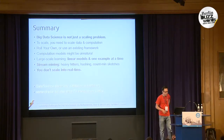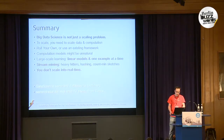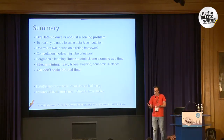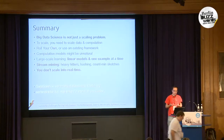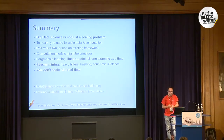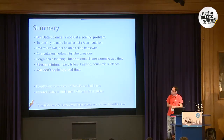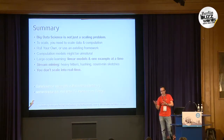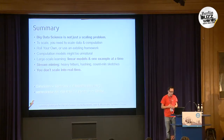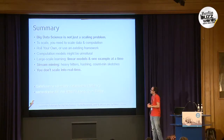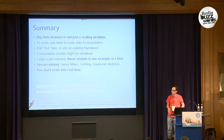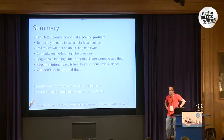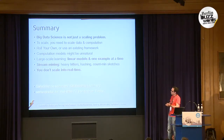In summary: big data science is not just a scaling problem. You can't just shop for your favorite scalable database and say everything's solved. There are different solutions for different kinds of problems. You have to scale both your data and your computation — a database alone isn't enough. You can use an existing framework like MapReduce or Pregel, or write your own. The risk with existing frameworks is that the algorithm you have in mind and the framework's computation model may not match well. Large-scale learning — training a classifier — can be done very well without any scaling technology at all, just using the right algorithms. And stream mining is very helpful for real-time analysis. Remember: you don't just scale into real time.